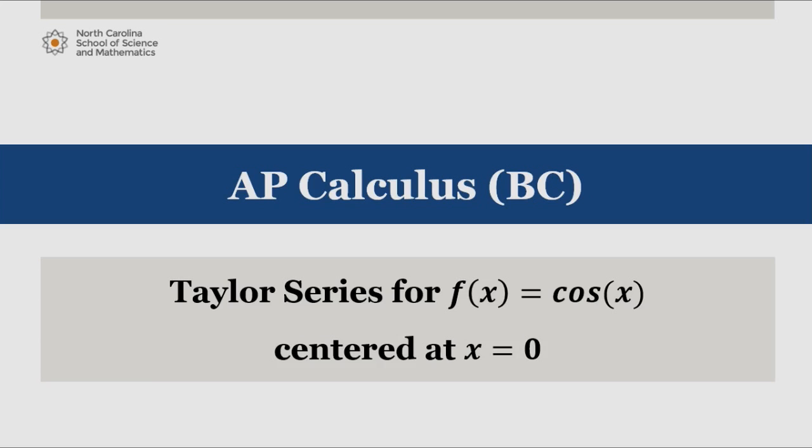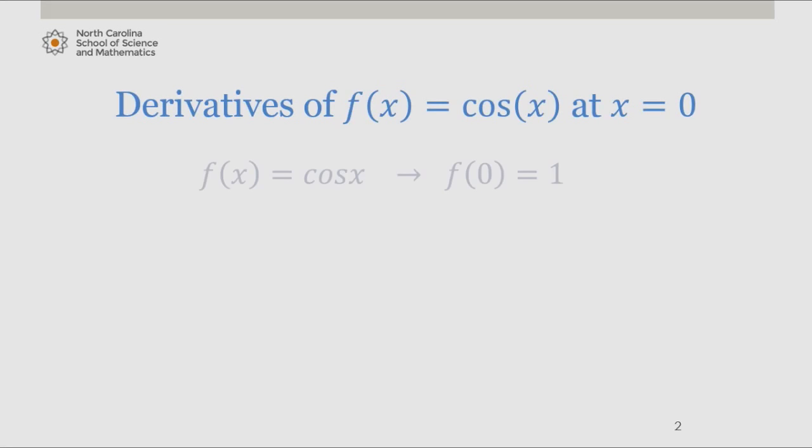We begin by finding several derivatives of cosine of x. The zeroth derivative of cosine is cosine. Evaluated at 0 gives us 1.